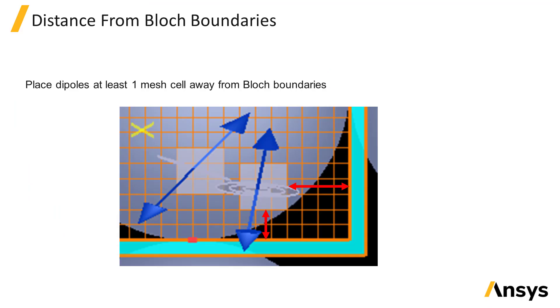Avoid placing the dipole source right next to block boundaries. A distance of at least one mesh cell should be used between the source injection region and block boundaries to avoid source injection errors.